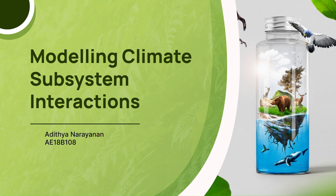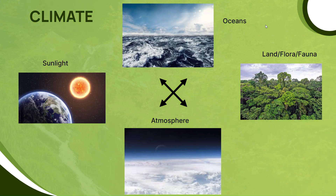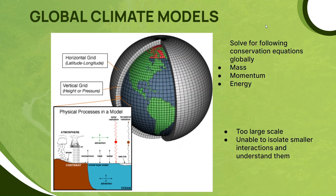This project is about modeling climate subsystem interactions. What we experience as climate is a bunch of different systems interacting with each other. They include sunlight, oceans, land, atmosphere, and the plants and animals living on the land. These systems interact with each other and result in physical parameters at that place, such as temperature, humidity, etc.